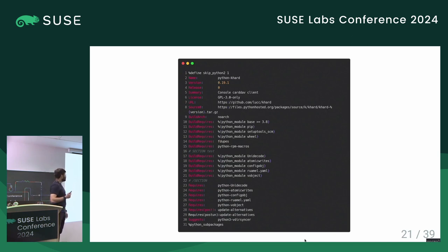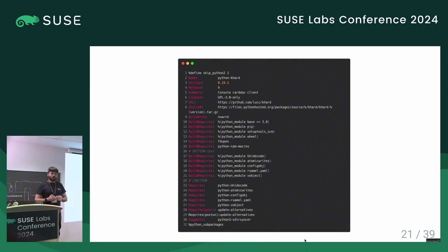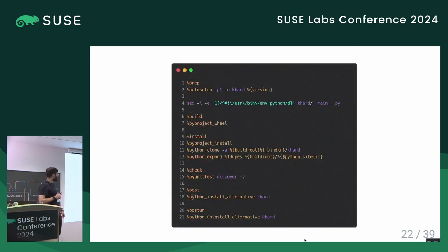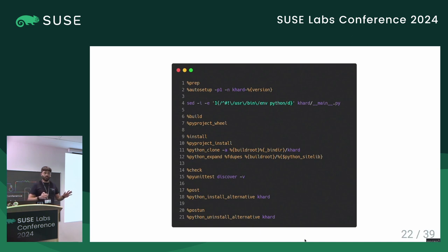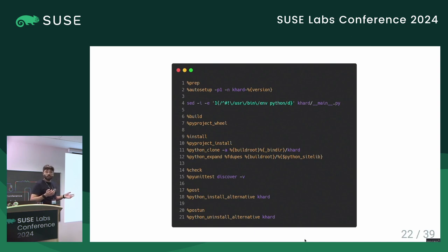Now let's see the same package in OpenSUSE. We define dependencies using the %{python_module} macro, because we don't know which Python version we're building for — the macro ensures we require the correct version of the module. In the rest of the spec file, we call all the Python macros — this is for pyproject, a newer approach. We never call Python directly. This allows us to avoid repetition, update macros when needed, and add the correct optimization and compilation arguments. This is really powerful and allows very streamlined packages.